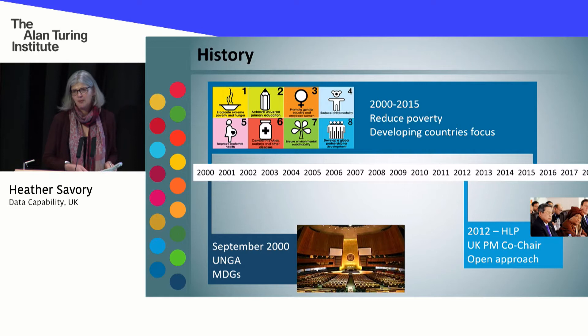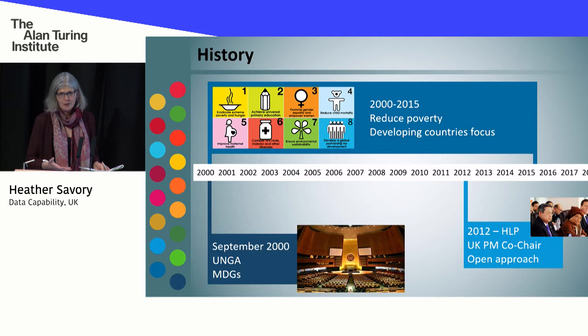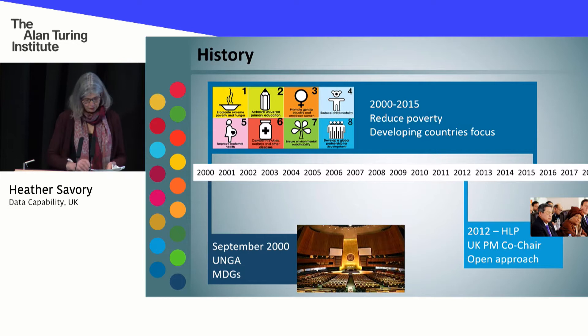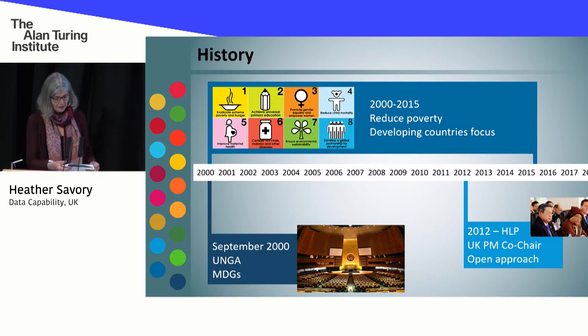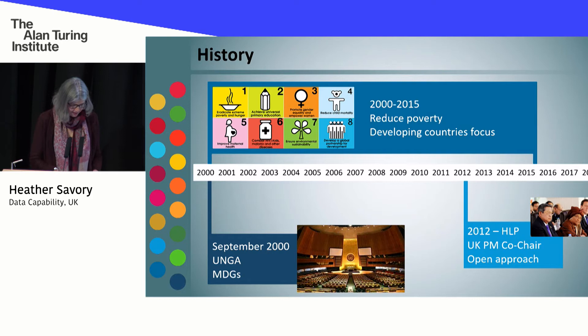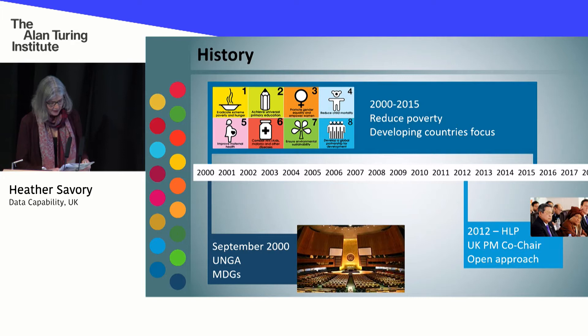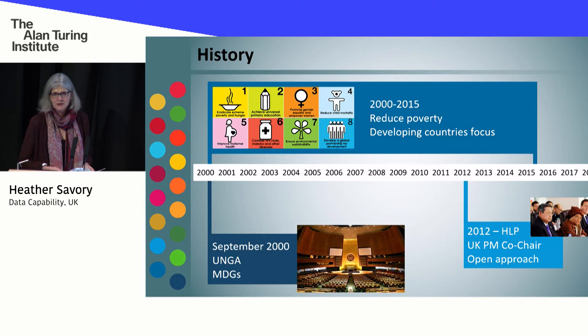2015 came closer and there was some progress made to these goals, but I think the general view is that there was not enough progress made. It was quite a big initiative, and it's very difficult to get countries to come together to work in this way. As 2015 came closer, Ban Ki-moon, who was the Secretary-General of the UN, launched an initiative to build up more momentum for the next 15 years. The member states decided they were going to determine another set of goals to build on the MDGs. There were 27 members of a high-level panel in 2012, chaired by David Cameron, and there was a call for consultation because the Millennium Development Goals hadn't been widely enough consulted on.